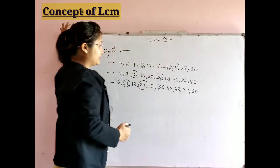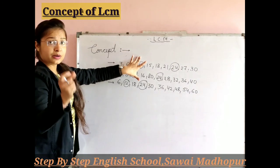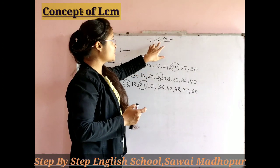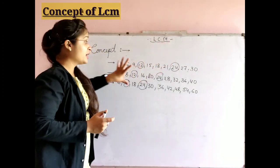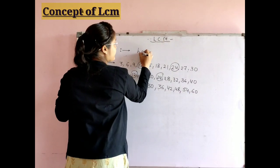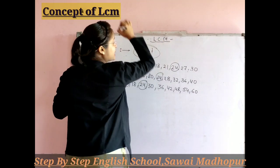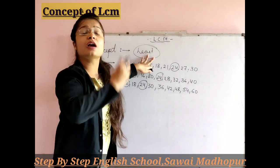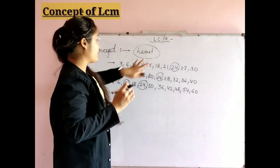There are many common multiples. But now, the full term has three words: least, common, multiple. What does 'least' mean? The least means the smallest one — the very first one.